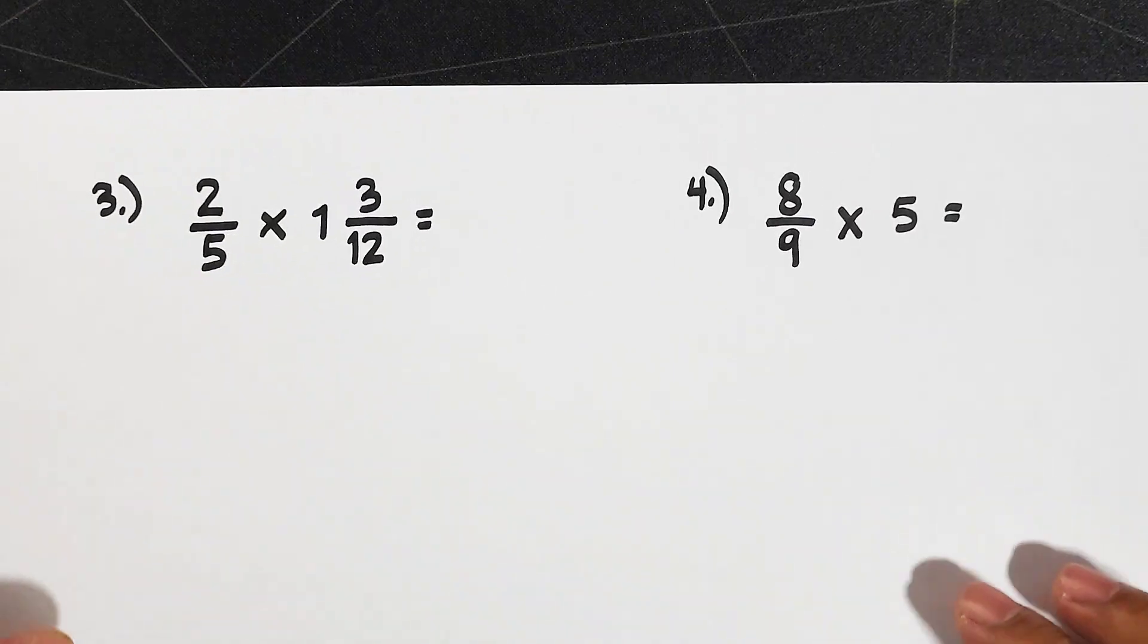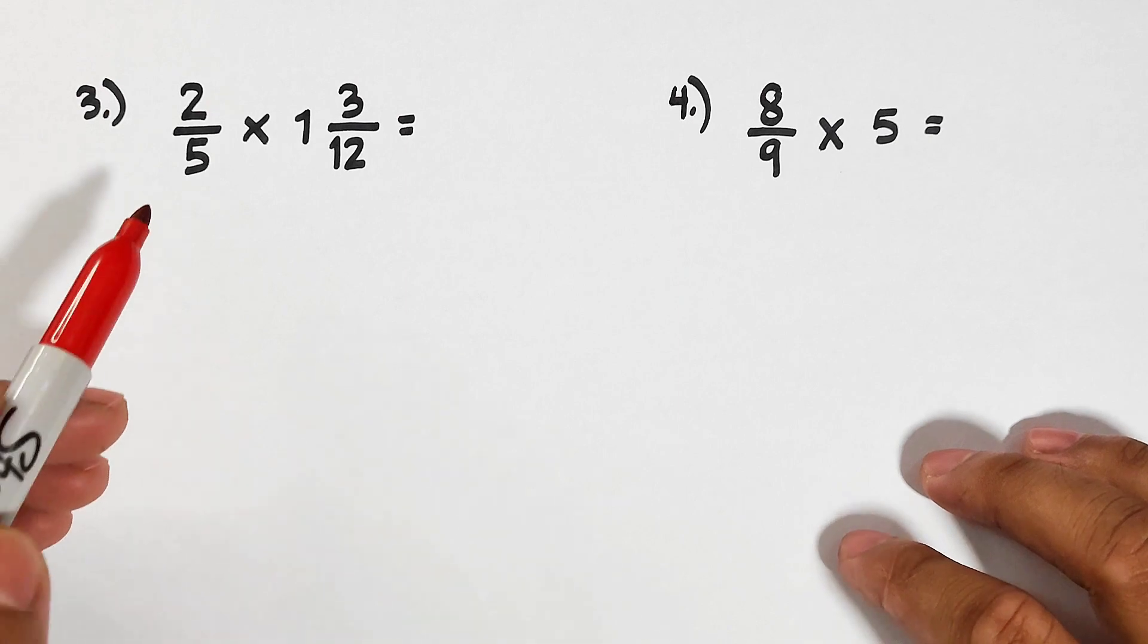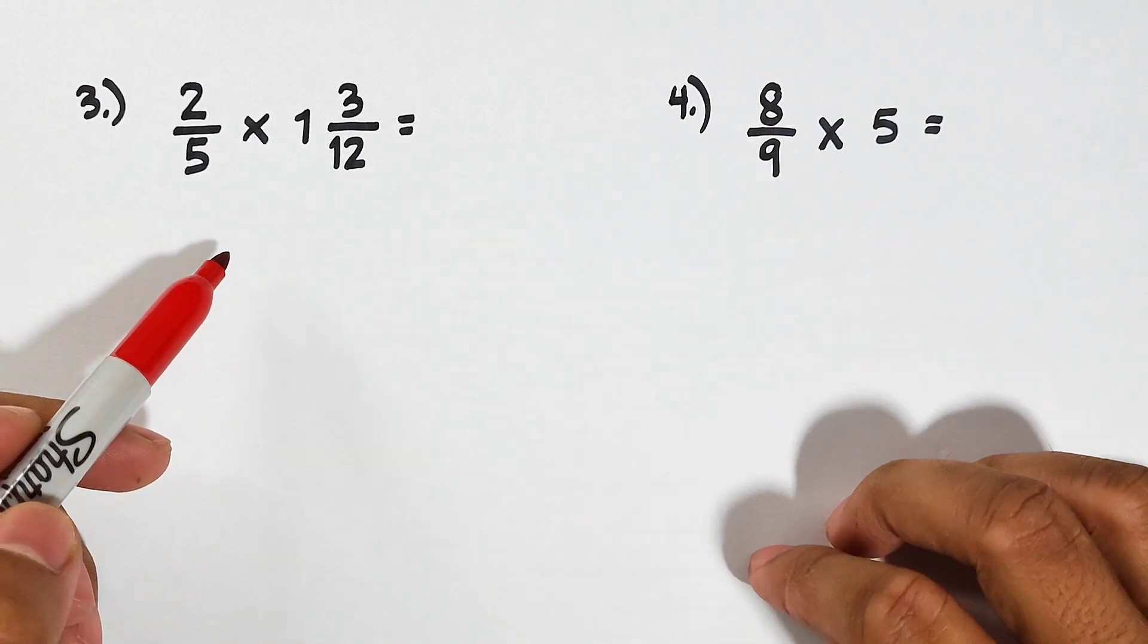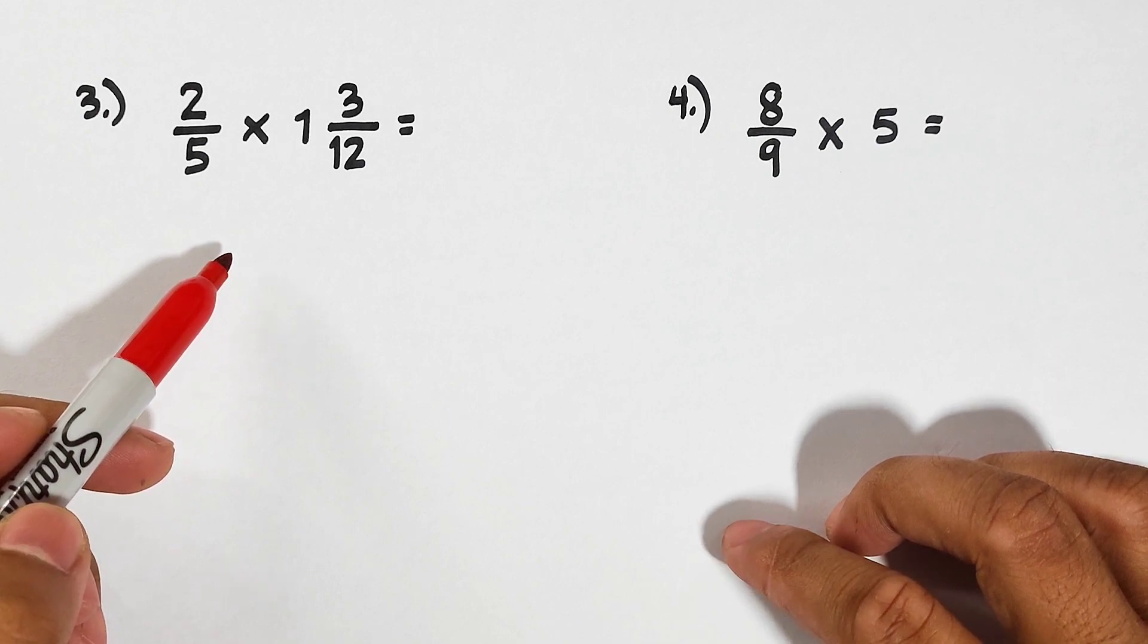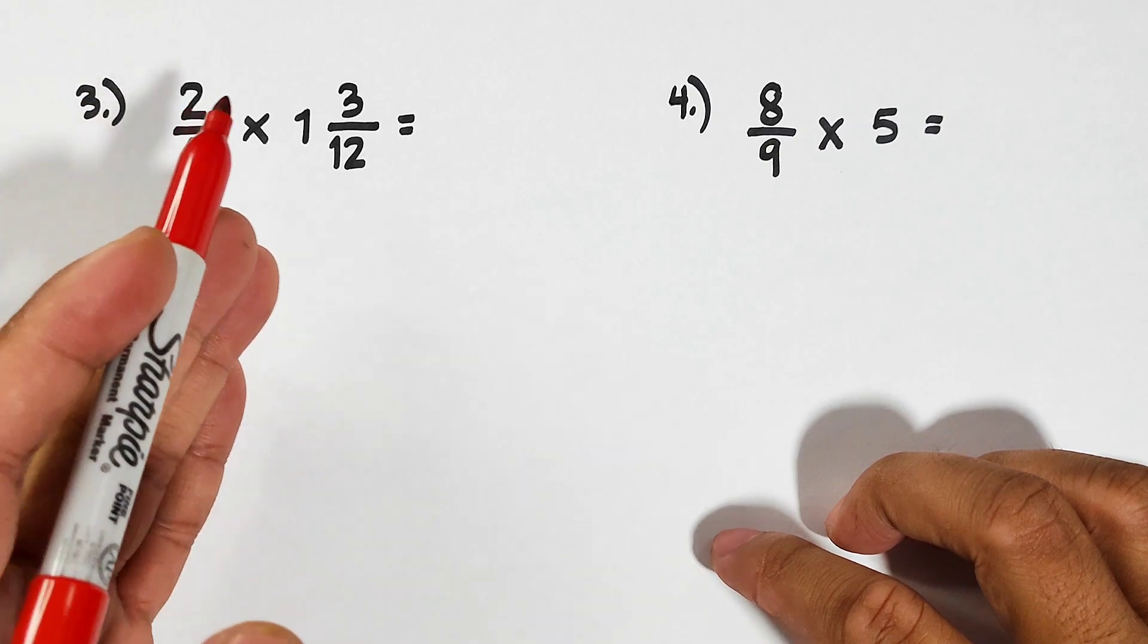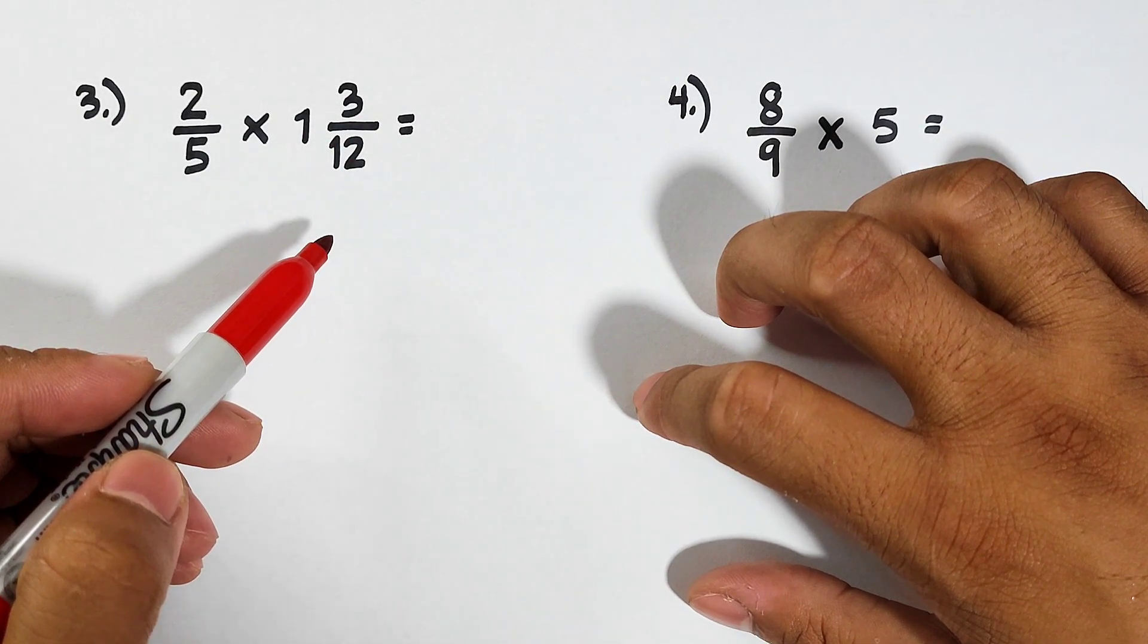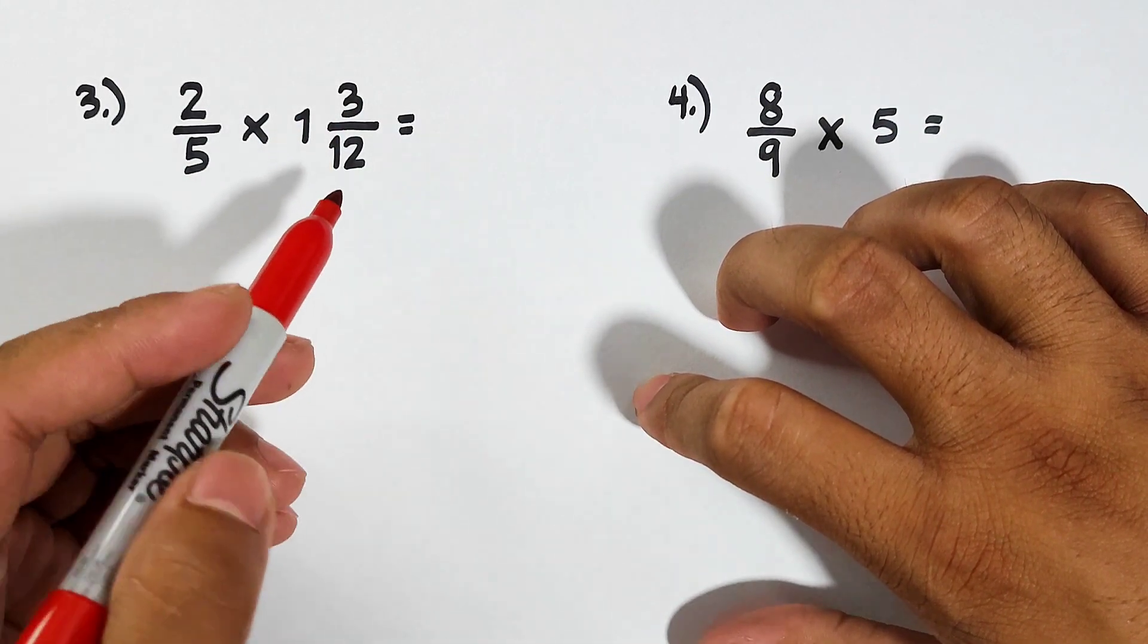Now let's move on with item number three. We have 2/5 times 1 and 3/12. This 1 and 3/12 is an example of a mixed number. So here we will multiply a fraction by a mixed number. But look at 3/12, we can simplify 3/12 as 1/4. The lowest term of 3/12 is 1/4.